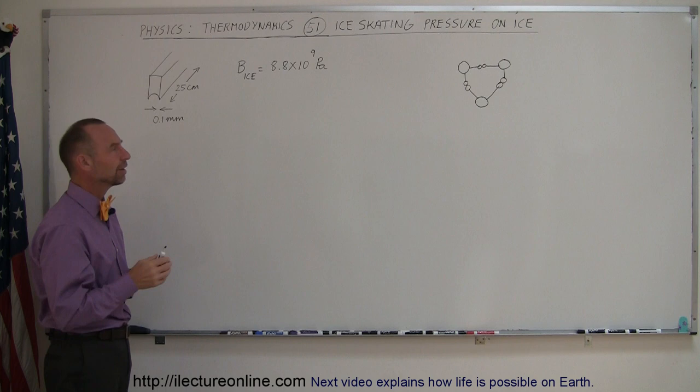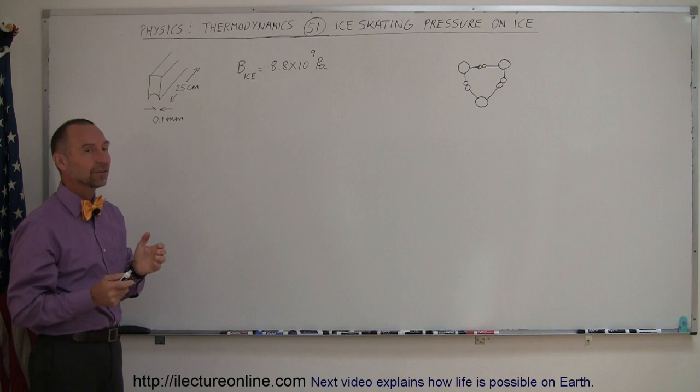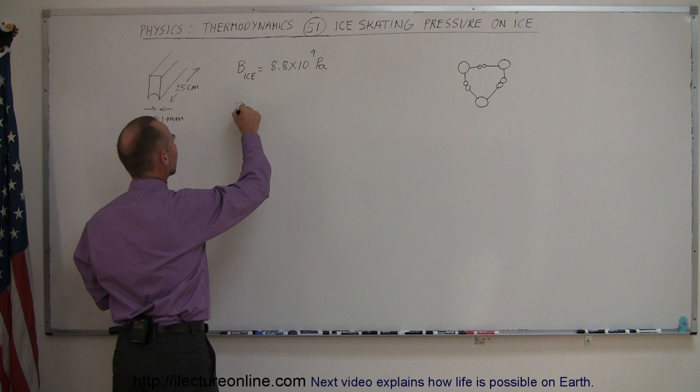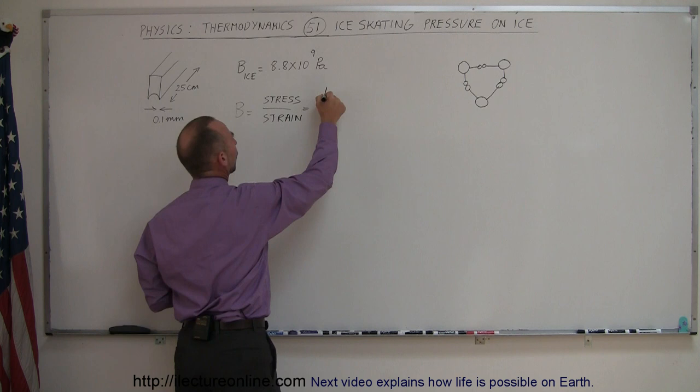We're trying to figure out if the pressure of the blades on the ice can actually melt the ice. Starting out, we have the bulk modulus of the ice, and what that means is that the bulk modulus by definition, B, is expressed in terms of the stress over the strain.